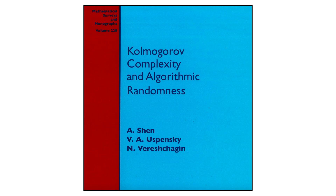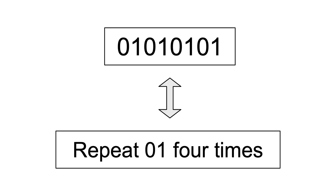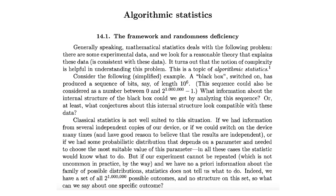The next item in the list is a book titled Kolmogorov Complexity and Algorithmic Randomness, which explores the theoretical underpinnings of information theory, such as determining the complexity of a string by the length of its shortest possible description. For instance, the sequence 0 1 0 1 0 1 0 1 can be described simply as 'repeat 0 1 four times,' indicating its low complexity. Ilya recommends reading only chapter 14, but be aware that the book is quite mathematically dense.